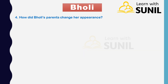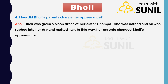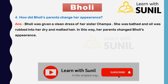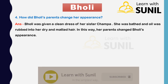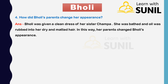Fourth: how did Bholi's parents change her appearance? Answer: Bholi was given a clean dress of her sister Champa. She was bathed and oil was rubbed into her dry and matted hair. In this way her parents changed Bholi's appearance.